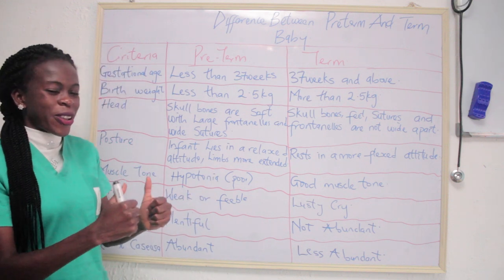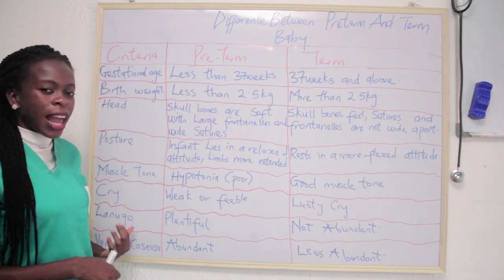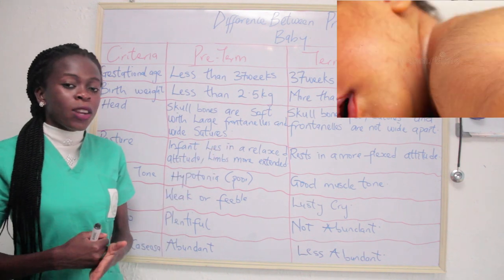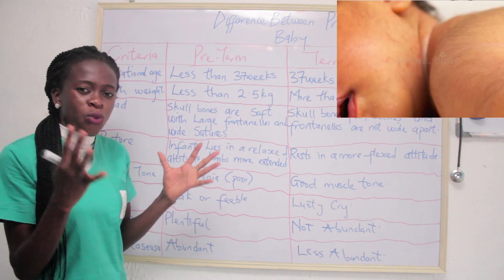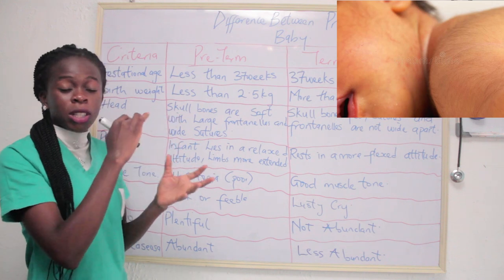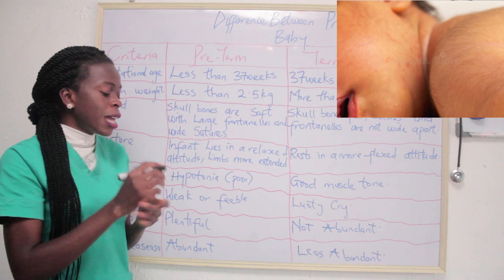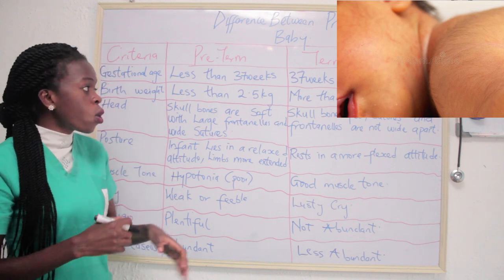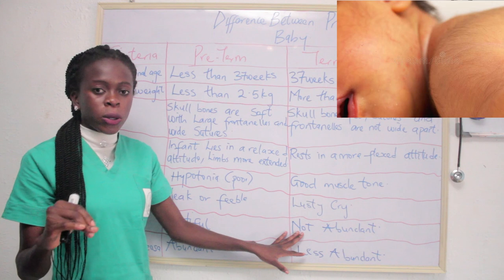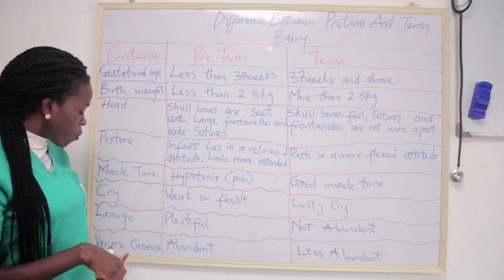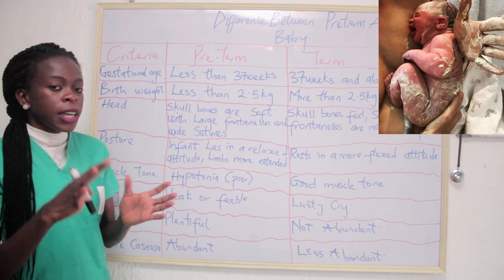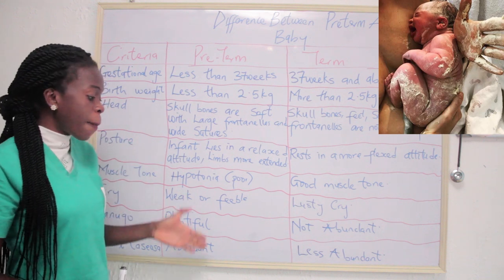In terms of lanugo, for pre-term babies lanugo is plentiful — you can see the description of lanugo on the screen. For term babies, lanugo is not abundant. The same applies for vernix caseosa: in pre-term babies it is abundant, but in term babies it is less abundant.